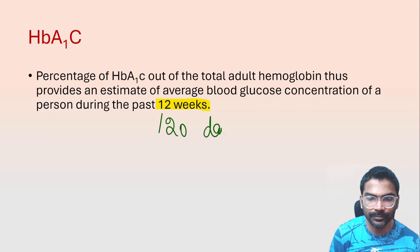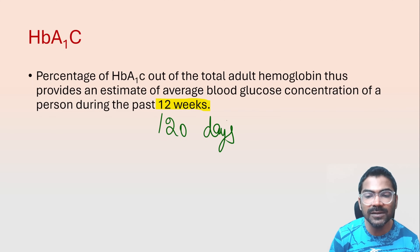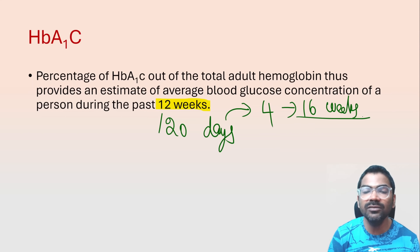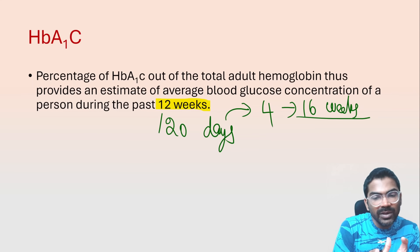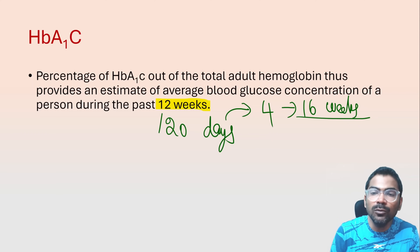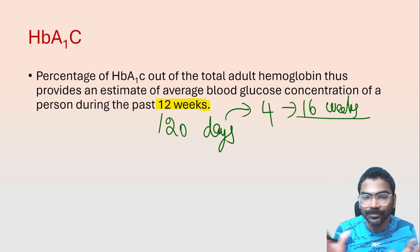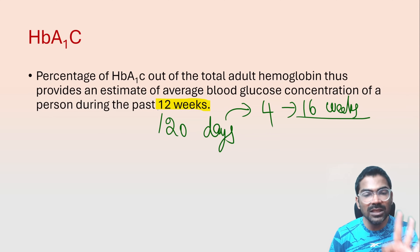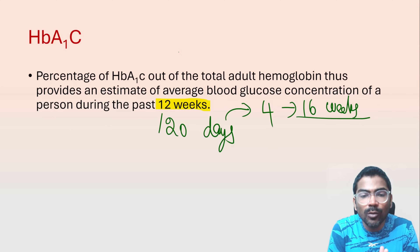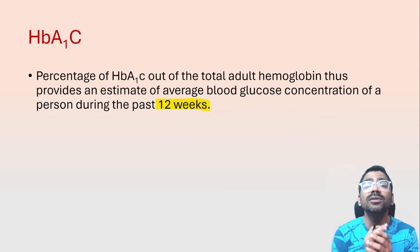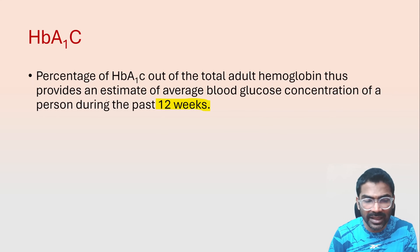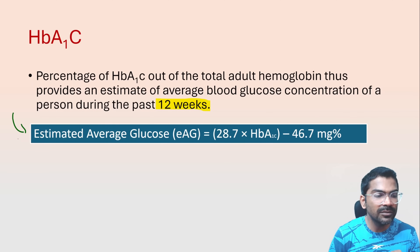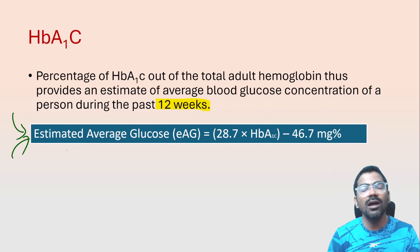The lifespan of RBCs is 120 days, which is 4 months or 16 weeks. We use 12 weeks rather than 16 weeks because RBCs can be old or new, so their lifespans differ — we take an average of 12 weeks, that is 3 months. HbA1c tells us about blood glucose level over 3 months. The estimated average glucose (EAG) over 3 months can be calculated using a formula, though it need not be memorized as labs provide it with results.